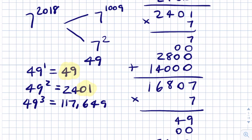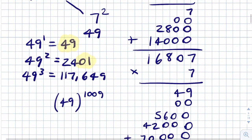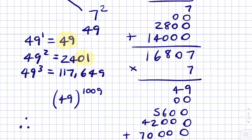Rewriting 7 to the power of 2018 as 49 to the power of 1009, and since 1009 is an odd power, it's going to end in 49. My answer is B. Therefore the answer is B.